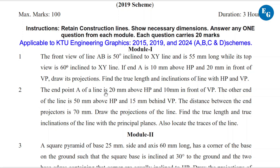The end point of a line is 20 mm above HP and 10 mm in front of VP. The other end of the line is 50 mm above HP and 15 mm behind VP. The distance between endpoints is 70 mm. Draw the projections of the line, find the true length and inclination of the line with the principal planes, and also locate the traces of the line.